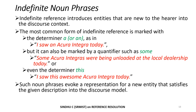Indefinite noun phrases: indefinite reference introduces entities that are new to the hearer into the discourse context. The most common form of indefinite reference is marked with the determiner 'a' or 'an,' as in 'I saw an Acura Integra today.' It can also be marked by a quantifier such as 'some,' like 'Some Acura Integras were being unloaded at the local dealership today,' or even with the determiner 'this,' as in 'I saw this awesome Acura Integra today.' Such noun phrases evoke a representation for a new entity that satisfies the given description into the discourse model.